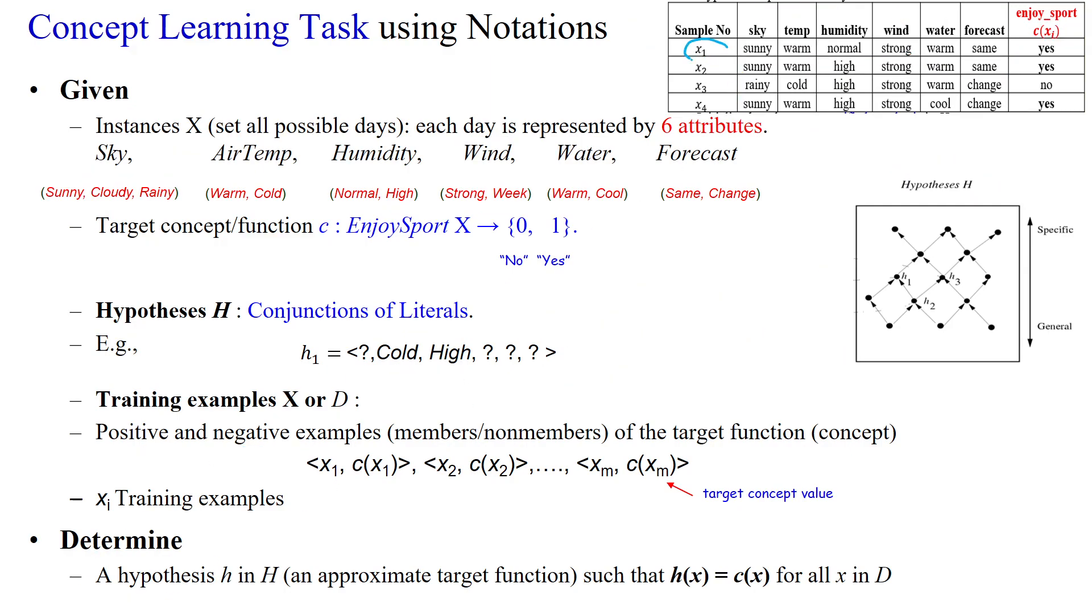So this is X1, its corresponding target concept is C of X1. So the first sample is represented like this. Second sample is X2. All features, these attributes are coming under X2. Then the value target concept is C of X2. Like that N number of samples or M number of samples, XM, C of XM.